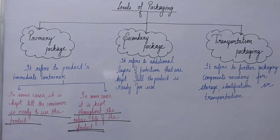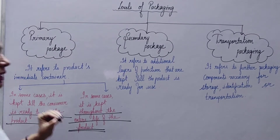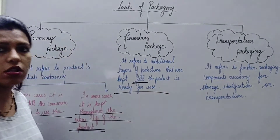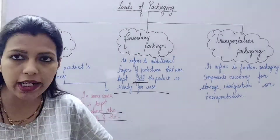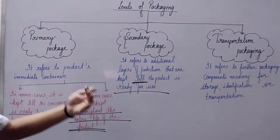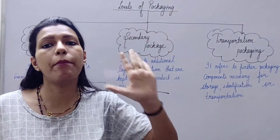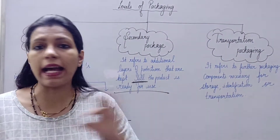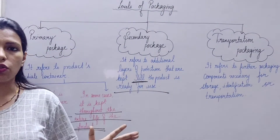Next is the secondary package. It refers to additional layers of protection that are kept until the product is ready for use. There is no confusion here. The secondary package is an additional, extra layer of packaging for protection, and it is only kept until we start to use the product. It is never kept for the entire life of the product — when you start using the product, you will dispose of it.